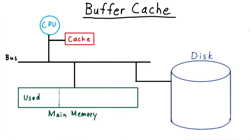Now that we've seen how file systems work, we turn to several optimizations that help make it fast, since mass storage devices tend to be slow. We'll first discuss some software optimizations, and then turn to hardware.